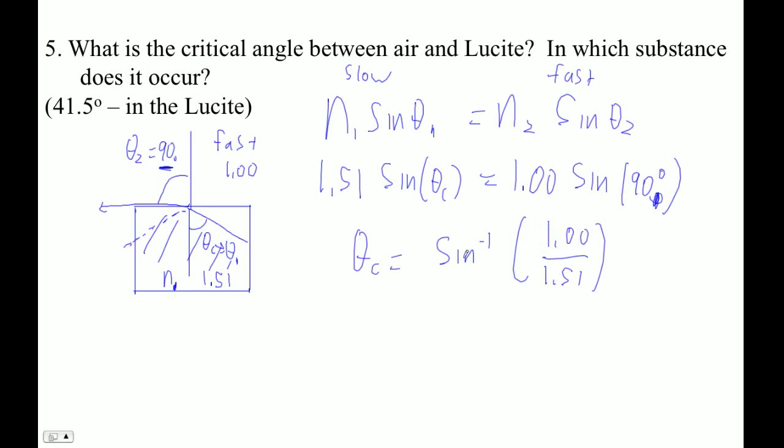So let's just do this inverse sine, second sine of 1 divided by 1.51, and I get 41.47 degrees. Where does this, in which substance does the critical angle occur? Well, the critical angle is happening in the Lucite right there.